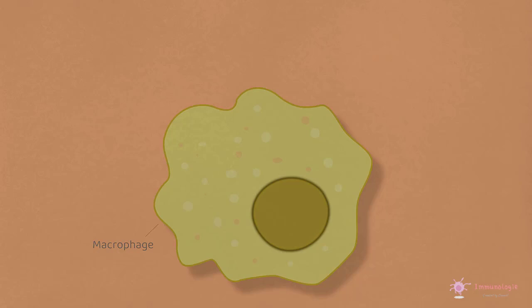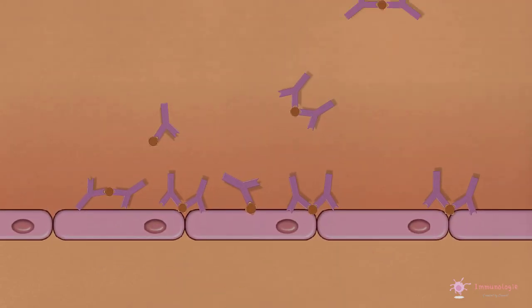Cependant, si ce système de clairance est débordé, les complexes se déposent dans les vaisseaux sanguins et les tissus.